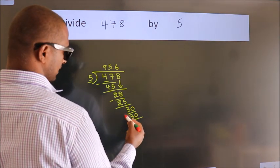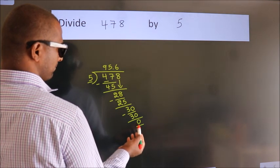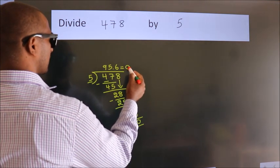Now we subtract, we get 0. We got remainder 0. So this is our quotient.